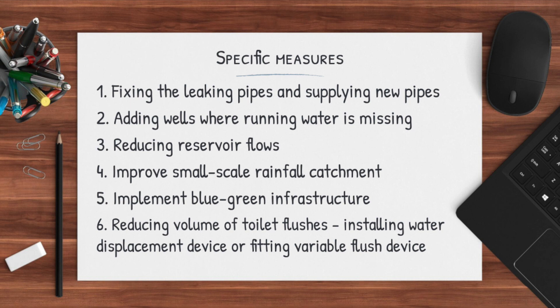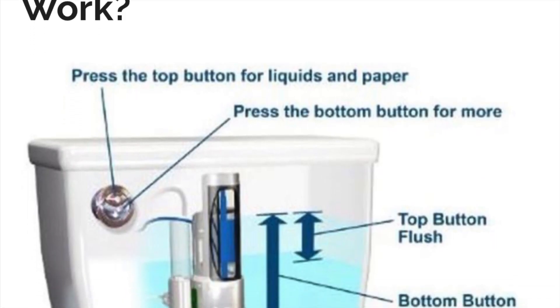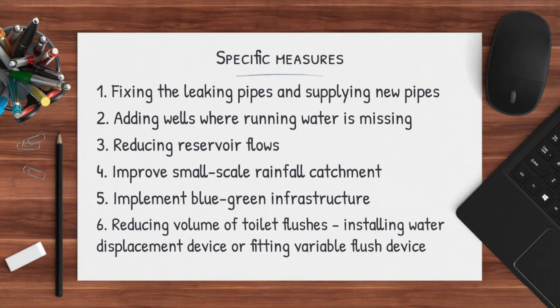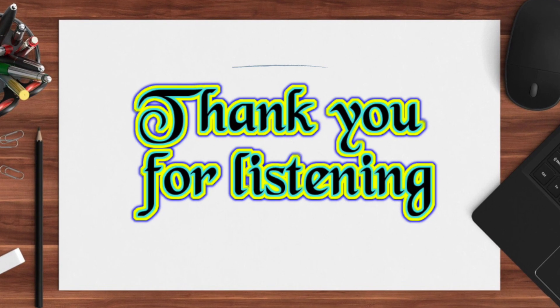As a more specific measure relating to efficiency, reducing the volume of toilet flushes can be done by installing water displacement devices or fitting variable flush devices, which constrain how much water is used per flush. This can also be applied to other elements like dishes, laundry, or garden irrigation — overall implementing measures to reduce the amount of water used in those practices. Using all these measures, we would like to improve the water situation in South Africa.